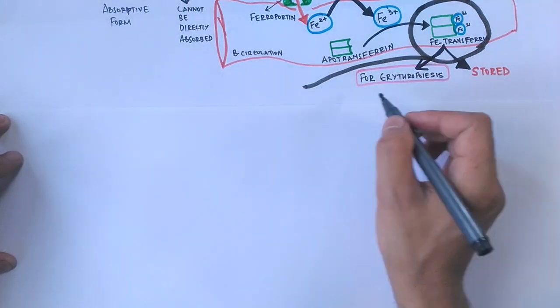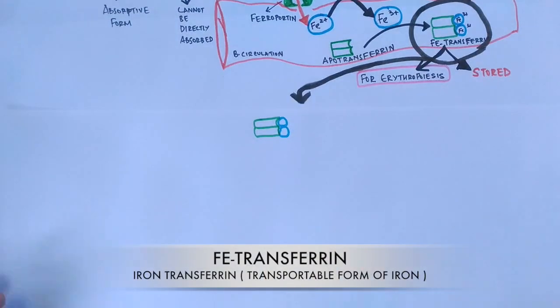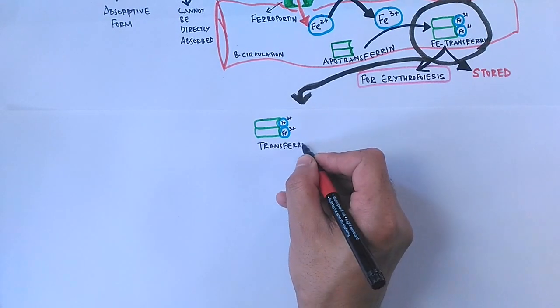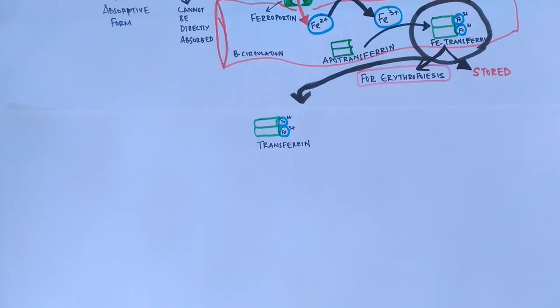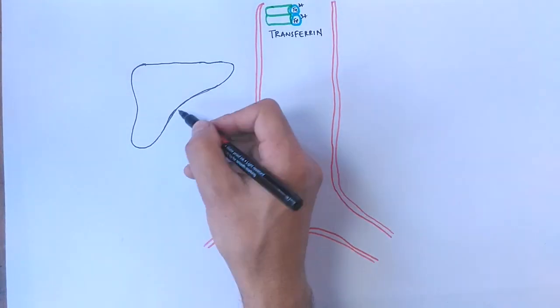In the transport of iron, we have an iron ion bound to a transferrin molecule, forming an iron-transferrin complex as shown in the figure. It's this transferrin molecule that has the capability to transport iron ions throughout our body, and it's present in the blood circulation.